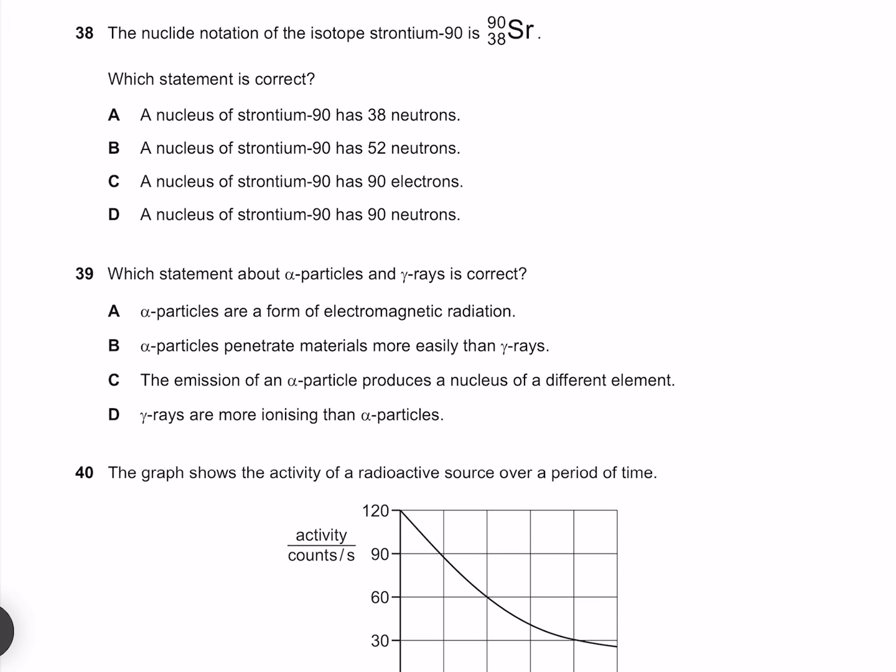The nuclide notation of an isotope, strontium-90, is shown. Which statement is correct? Our atomic number of 38 means there are 38 protons. And our atomic mass is our protons plus our neutrons, which means our number of neutrons must be 90 minus 38, which gives us 52 neutrons. So our answer must be B.